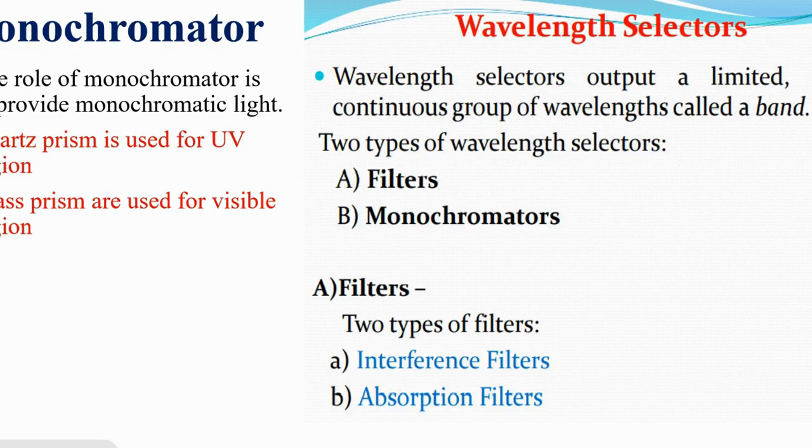Monochromator: if quartz prism is used, then UV region. And if glass prism is used, for that visible region. These are the wavelength selectors.